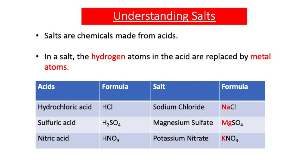Sulfuric acid has the chemical formula H₂SO₄. A salt formed from sulfuric acid is called a sulfate, so magnesium sulfate is an example with the formula MgSO₄. Nitric acid is HNO₃, and the salt formed is always a nitrate — for example, potassium nitrate has the formula KNO₃. In each case the hydrogen in the acid is replaced by metal atoms.